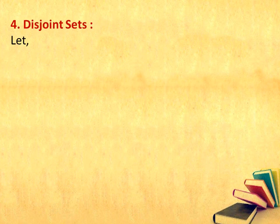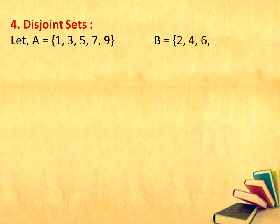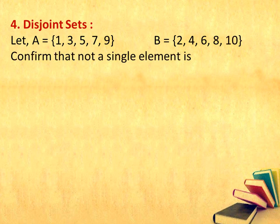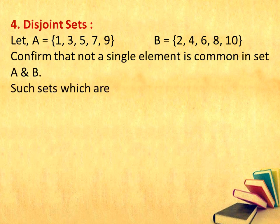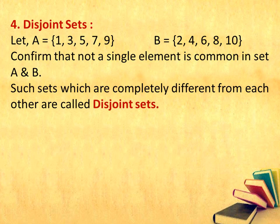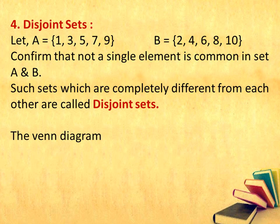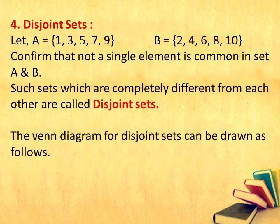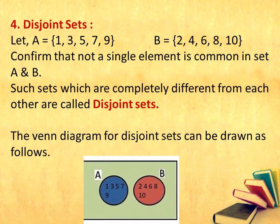The next topic we are going to learn is disjoint sets. Let A is equal to {1, 3, 5, 7, 9} and B is equal to {2, 4, 6, 8, 10}. Confirm that not a single element is common in sets A and B. Such sets which are completely different from each other are called disjoint sets. There is not even a single element in common — they are completely different. Therefore, the name itself says disjoint. The Venn diagram for disjoint sets shows set A in one circle and set B in a completely separate circle, with even the colors inside the regions being different.